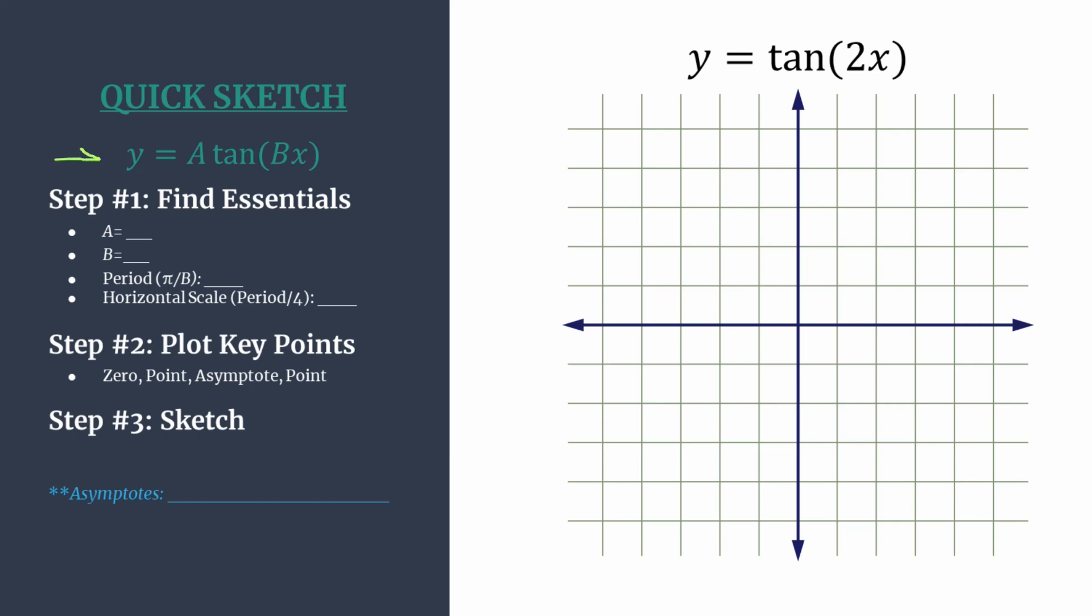To help as we go we have the general form of a tangent equation and our outline of steps. Step one we'll find our essentials starting with A, that's just the leading coefficient in front of the tangent. In our equation it's an understood one since we don't see anything there, and that's going to help set the y coordinates for our points, our upper and lower curve setting points in step 2.